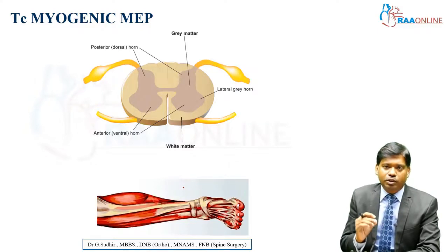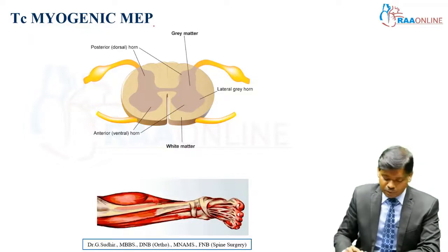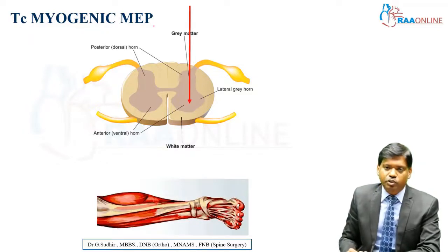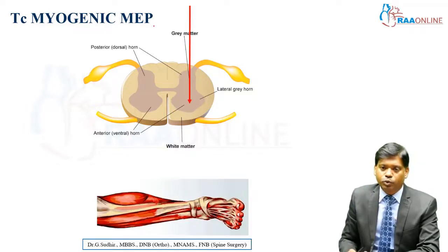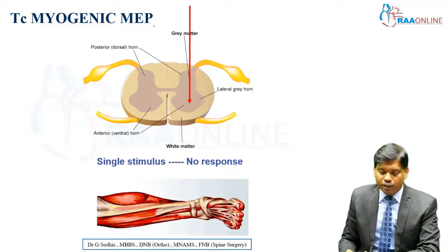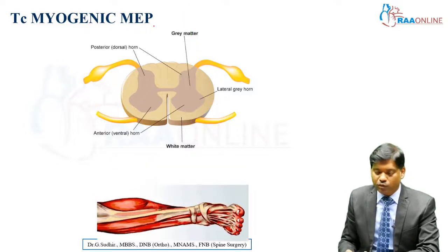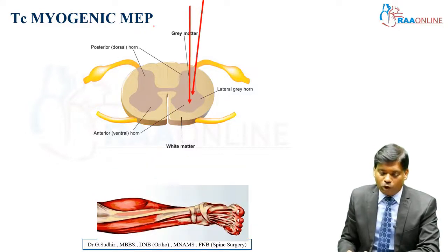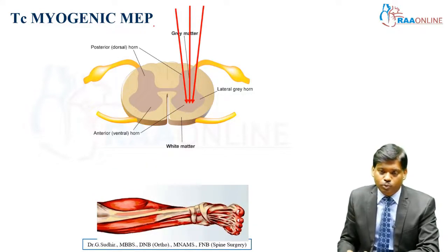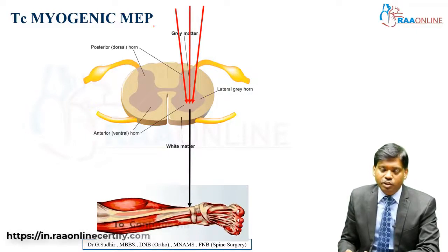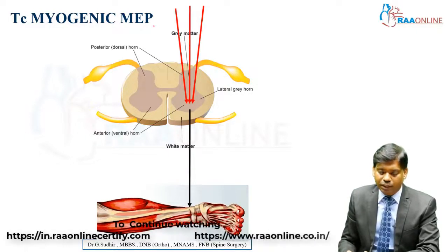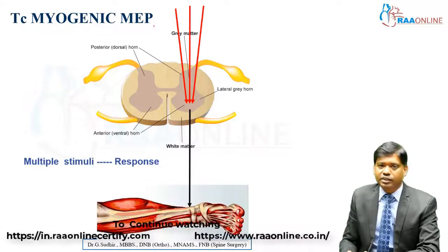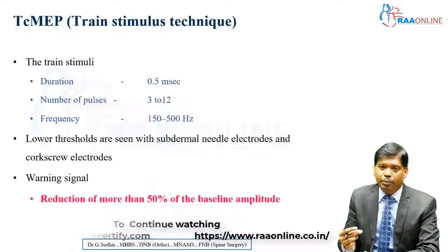The commonly used method of neuromonitoring is transcranial myogenic MEP. The impulse travels from the brain down to the spinal cord and to the anterior horn, but a single stimulus usually produces no response. However, when a train of multiple stimuli is applied, the response is picked up by the muscles via electrodes placed in them. This is called the transcranial myogenic MEP.